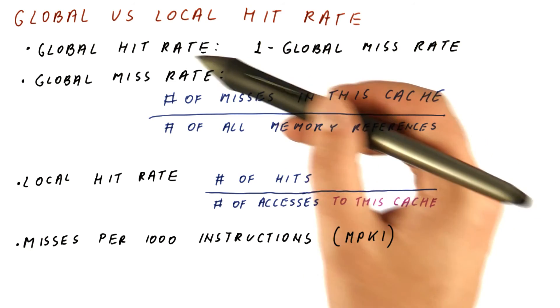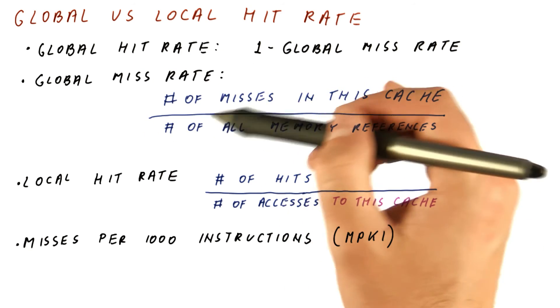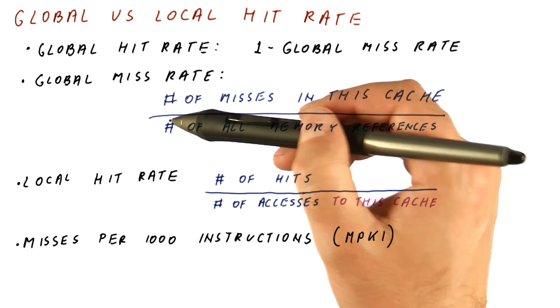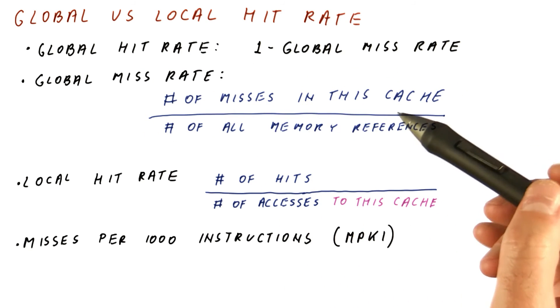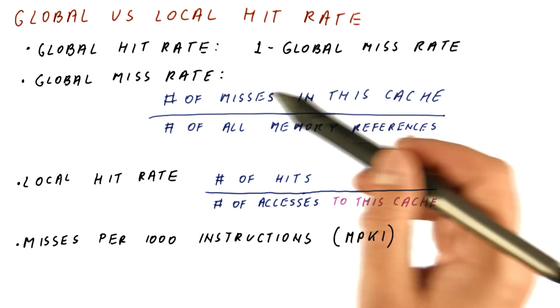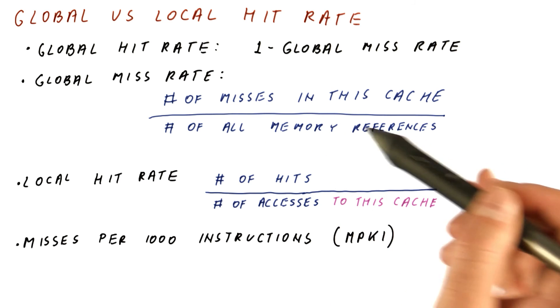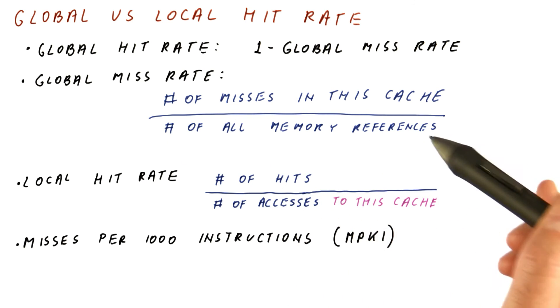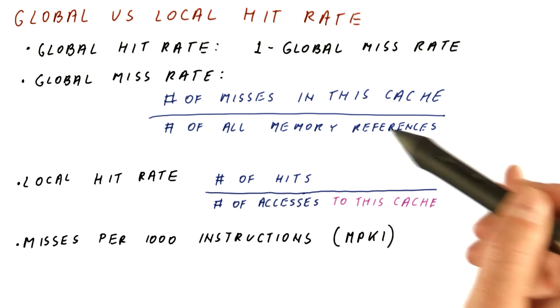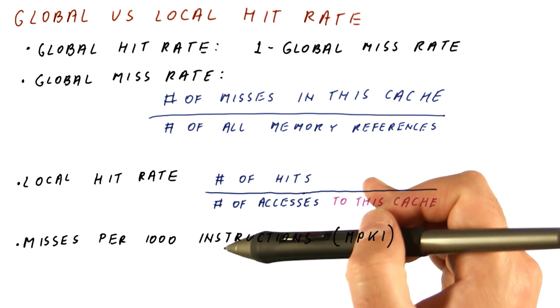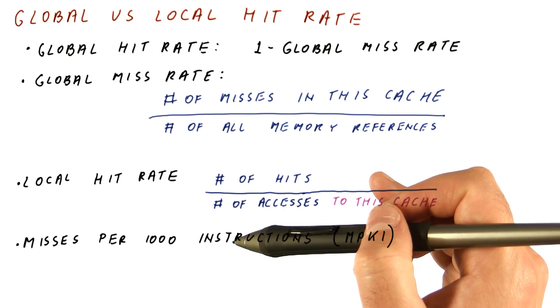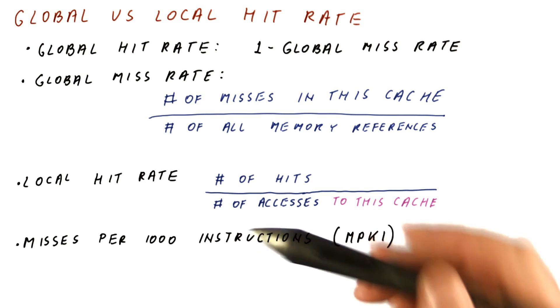MPKI is very similar to the global miss rate, except that it doesn't normalize the misses with the number of just memory accesses — it normalizes with the number of instructions.